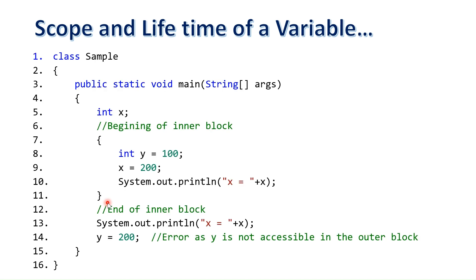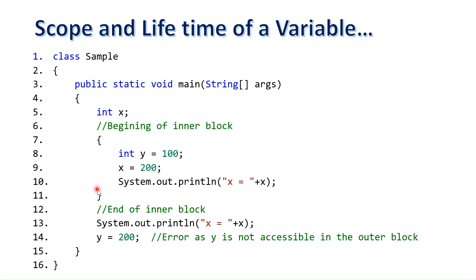In this example, the variable x is declared inside the main method, so the scope of x is throughout that method. The variable y has been declared inside an inner block, so the scope of y is only up to the end of that inner block.